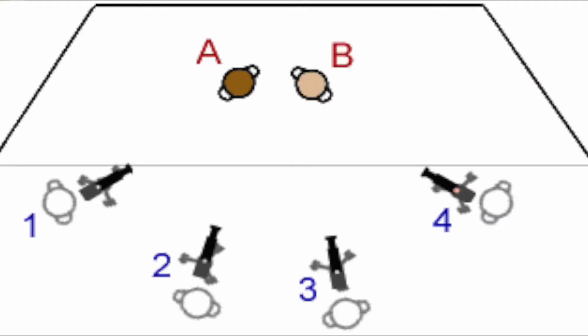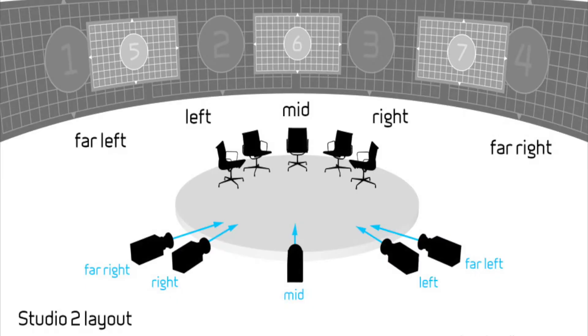Let me explain to you guys what multi-cam is. The multiple camera setup is a method of filmmaking and video production. Several cameras, either film or professional video cameras, are employed on the set and simultaneously record or broadcast a scene.